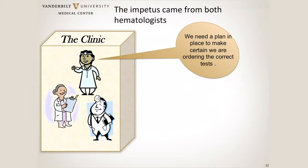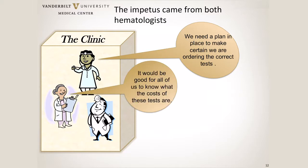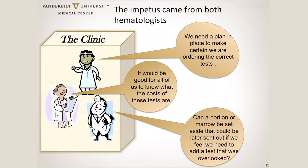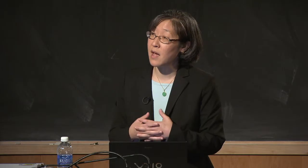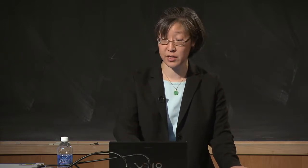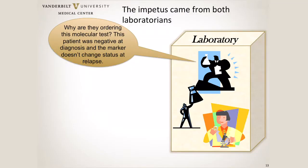The impetus was not one-sided — it really was two-sided. Our hematologists — and these are verbatim quotes from emails sent to me — said: 'We need a plan in place to make certain that we're ordering the right tests. It would be great if we knew how much these tests cost. Can some of the marrow be set aside so if we forgot a test we can add it on later?' These questions show they're struggling with the massive number of tests. You'll notice none of them actually address clinical or analytical sensitivity, because that doesn't even cross their minds.